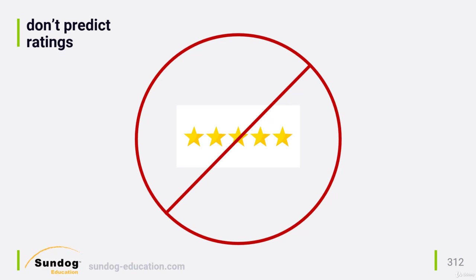Netflix also relies on live A/B tests online to tune its systems. They use what they call an offline-online testing procedure to use offline metrics to get an initial cut at which new ideas might perform well online, and then use live online A/B tests to validate those ideas on real people. That's basically the approach we've promoted throughout this course.